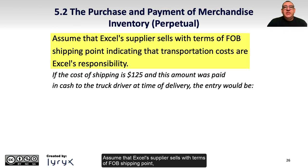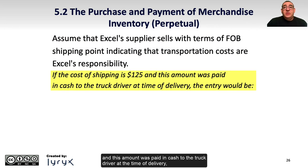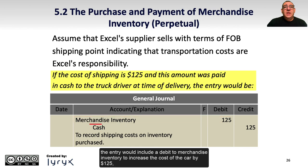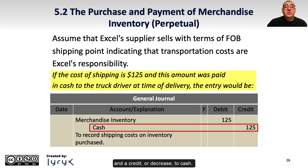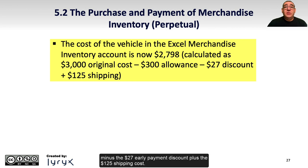Assume that Excel's supplier sells with terms of FOB shipping point, indicating that the transportation costs are Excel's responsibility. If the shipping cost is $125 and this amount was paid in cash to the truck driver at the time of delivery, the entry would include a debit to merchandise inventory to increase the cost of the car by $125, and a credit or decrease to cash. The cost of the vehicle in Excel's merchandise inventory account is now $2,798, calculated as the original $3,000 cost, minus the $300 purchase allowance, minus the $27 early payment discount, plus the $125 shipping cost.